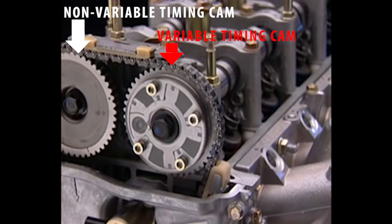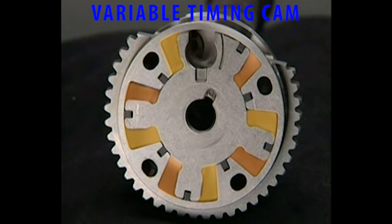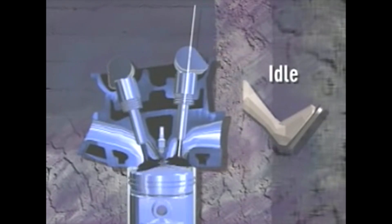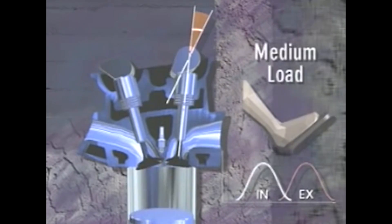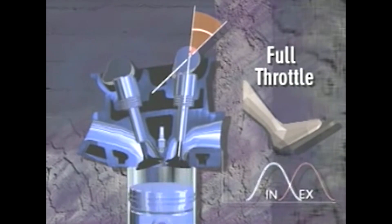Not all variable valve timing is the same concept. Now a system has been incorporated into the engine which can automatically adjust the cam sprocket hydraulically depending on the condition, improving low-end, mid-range, and high-end drivability while increasing fuel economy and reducing emissions.